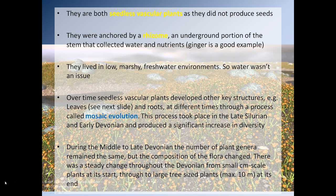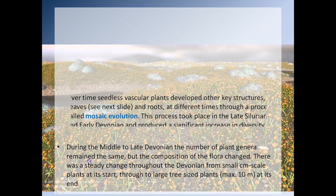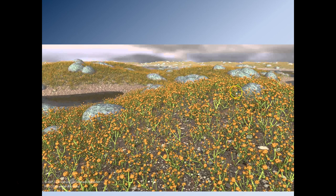Over time, seedless vascular plants developed key structures like leaves and roots through a step-by-step process — mosaic evolution. This took place in the late Silurian to early Devonian. Once plants had roots and leaves, diversity increased dramatically. During the middle to late Devonian, there was a steady change from small centimeter-scale plants at the start through to very large tree-sized plants of about 10 meters at the end, essentially leading to the appearance of forest-like environments.